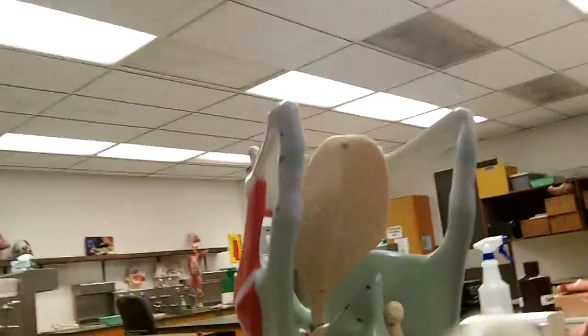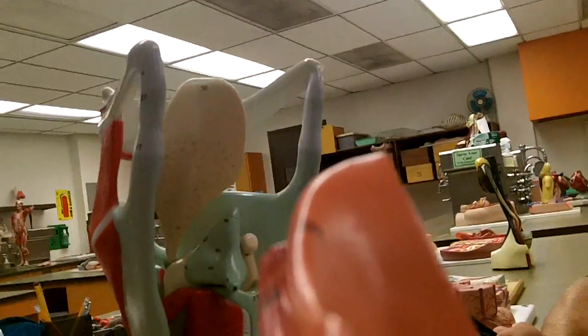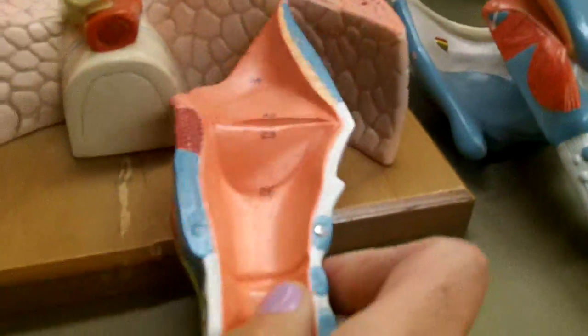Now, if I open this model up and look inside, we see on this model this lower ridge represents the true vocal cord, and this upper ridge right here represents the vestibular fold or the false vocal cords. And then, of course, the trachea continues inferiorly.